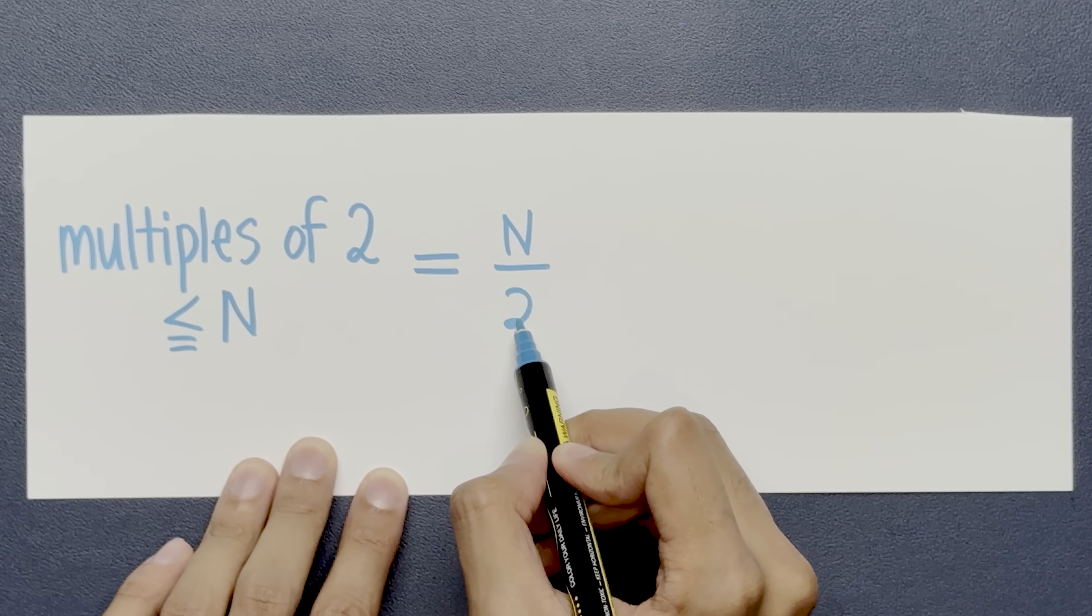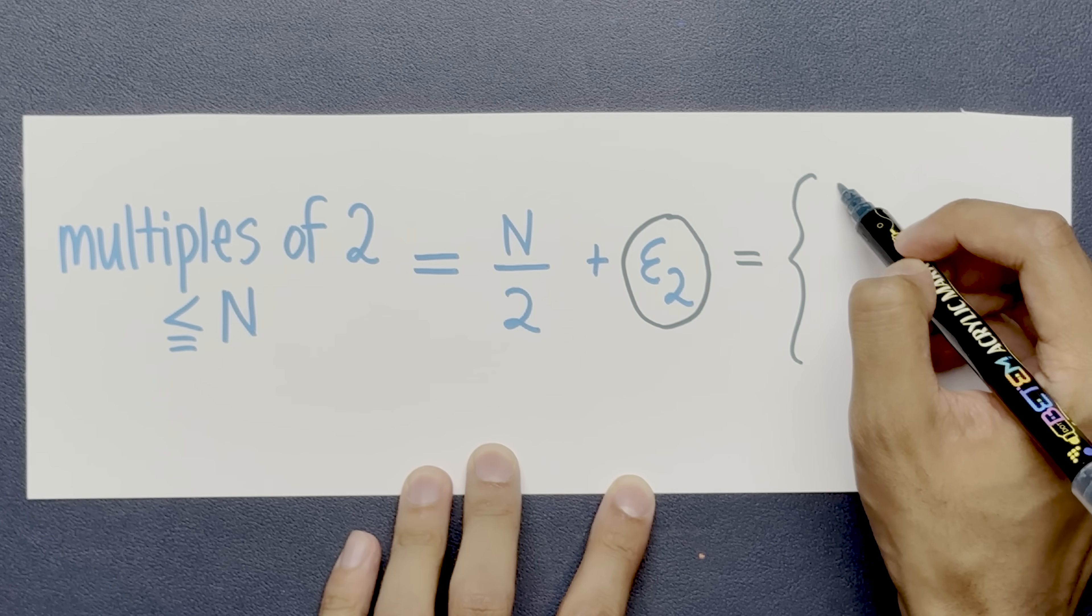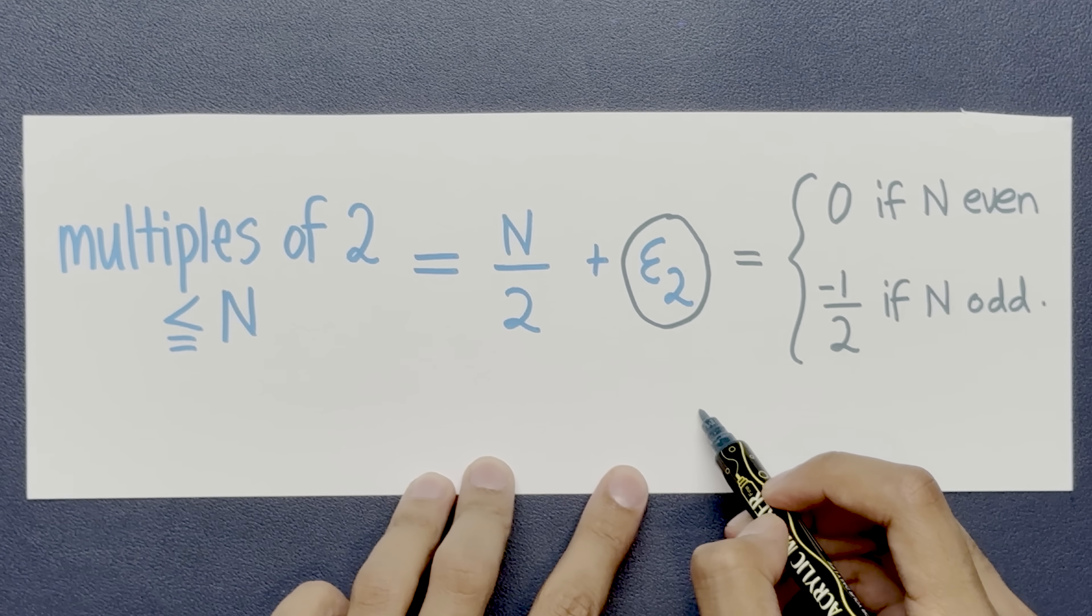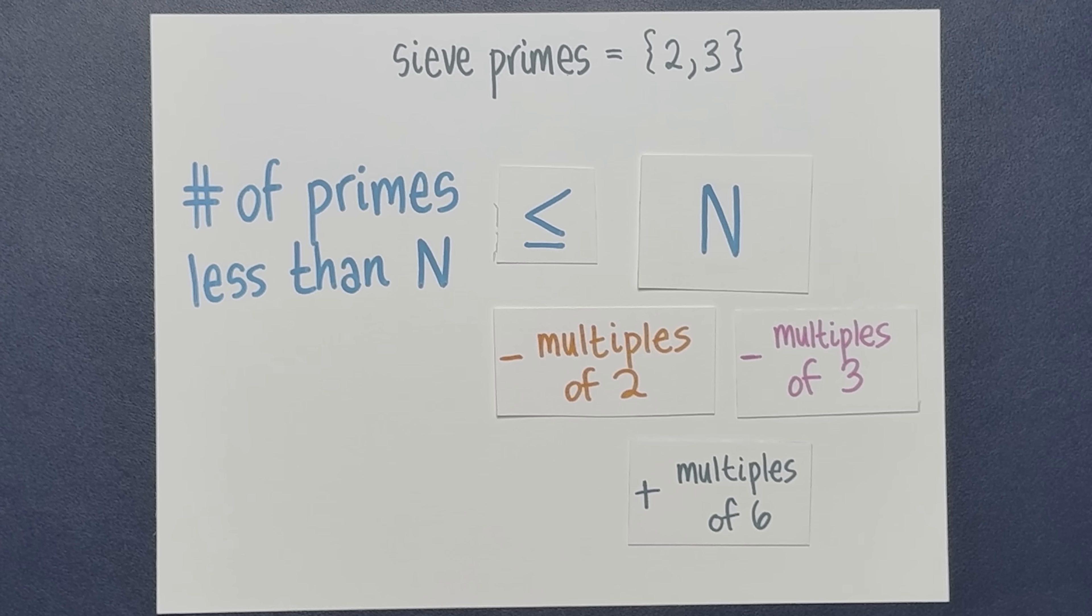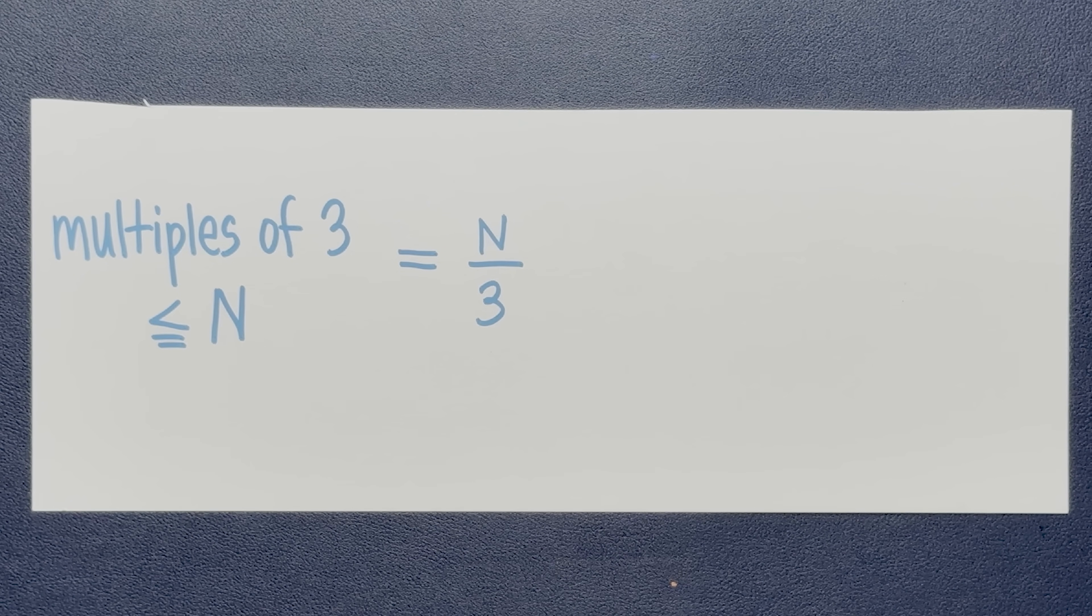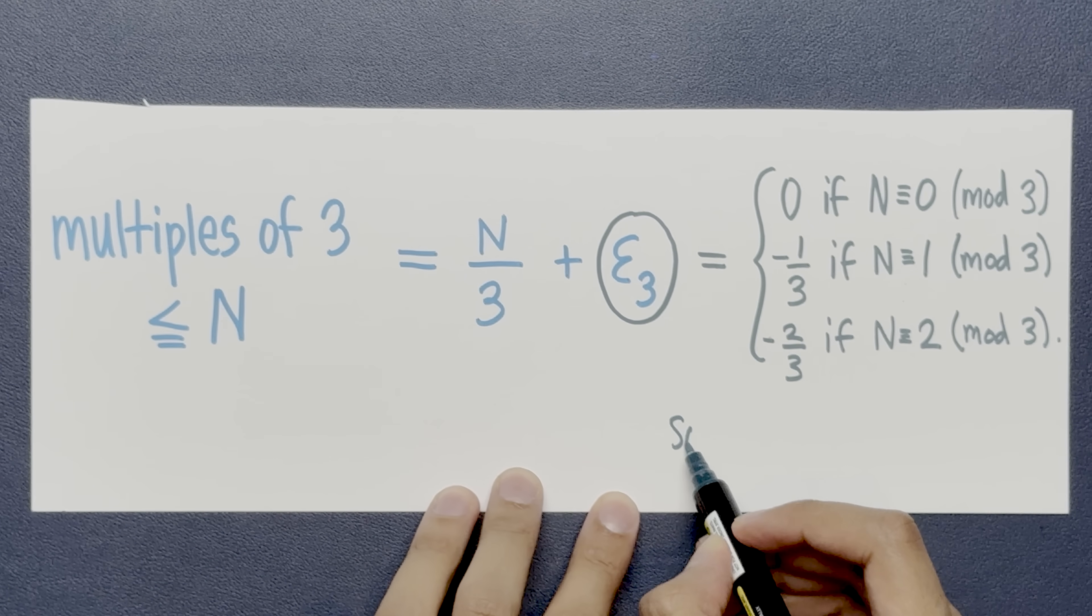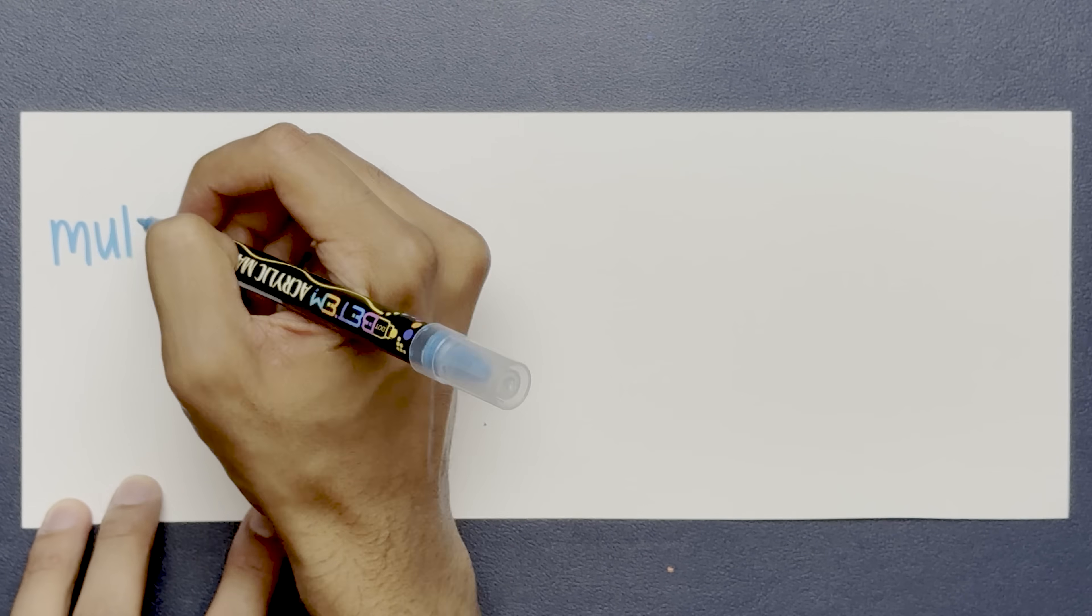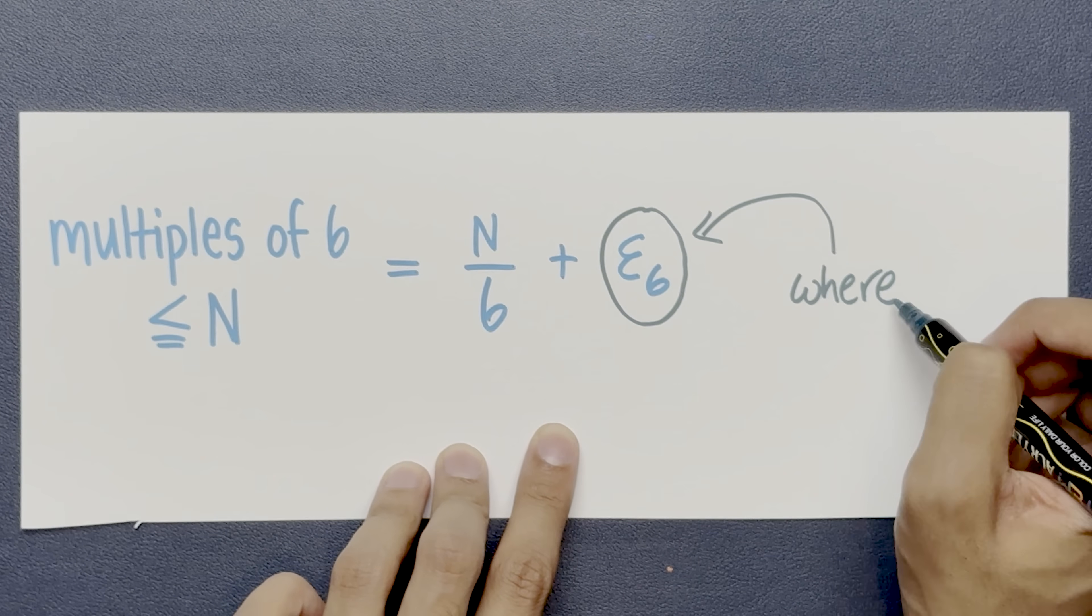Now we have to estimate each of these terms. How do you count the number of multiples of 2 less than or equal to n? Approximately, it's n over 2. But it may not be exactly n over 2. There's a small error term, call it epsilon 2. If n is even, this error term is 0. But if n is odd, this error term is minus a half. Now the important thing I want you to keep in mind is that epsilon 2 is between minus 1 and 1. Likewise, let's count the multiples of 3 less than or equal to n. This is approximately n over 3. There's an error term, epsilon sub 3. Its exact value depends on what n is modulo 3. Just like before, the thing I want you to keep in mind is that epsilon 3 is between minus 1 and 1. We can deal with the multiples of 6 in the same way. It's n over 6 plus epsilon sub 6, where epsilon sub 6 is between minus 1 and 1.